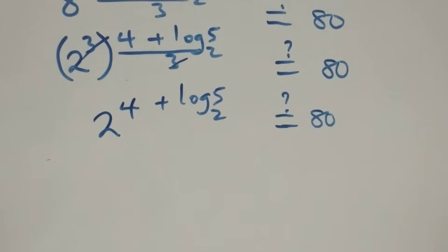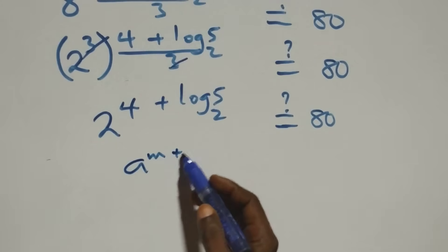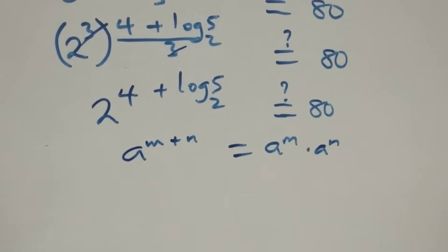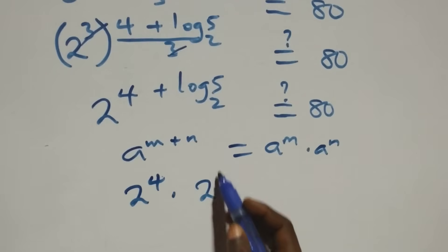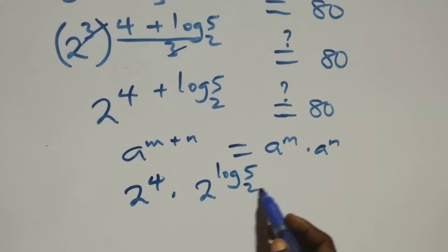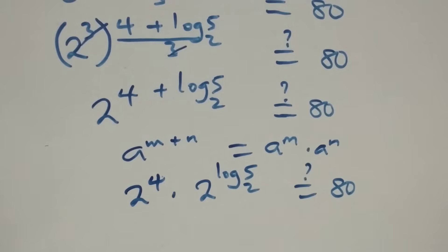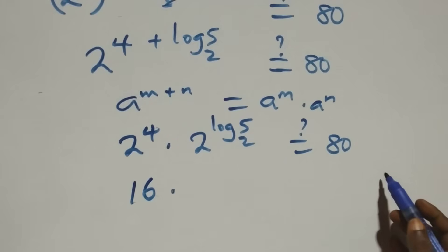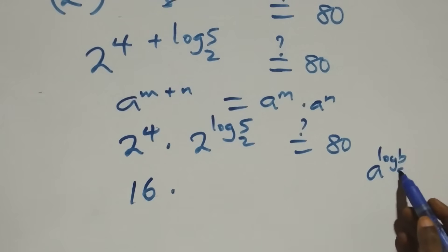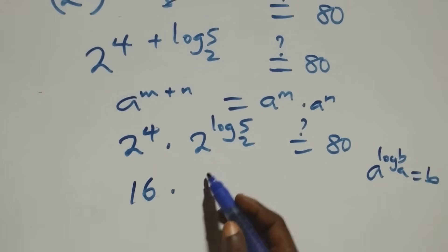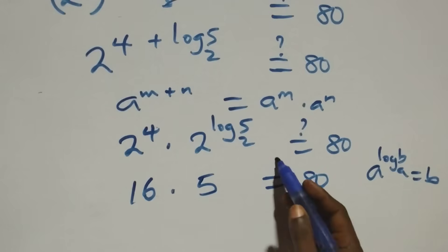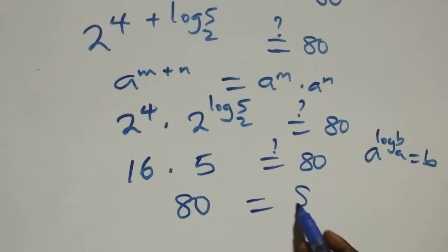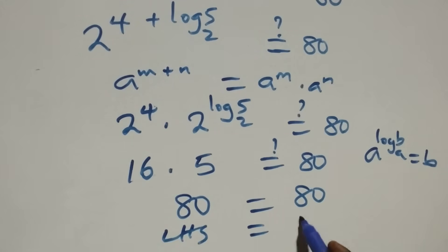This follows from the law of indices: a raised to power n plus n equals a raised to power n times a raised to power n. So this becomes 2 raised to power 4 times 2 raised to power log 5 base 2, equals 80. Since 2 raised to power 4 is 16, and using the rule a raised to power log base a of b equals b, we get 2 raised to power log 5 base 2 equals 5. So 16 times 5 gives us 80, which equals 80. Left-hand side equals right-hand side.